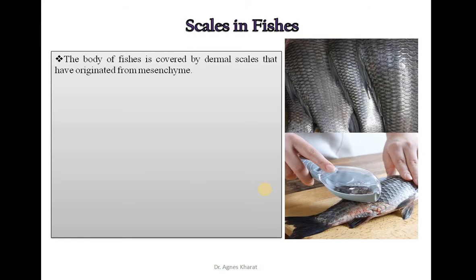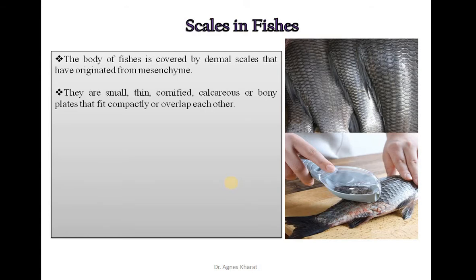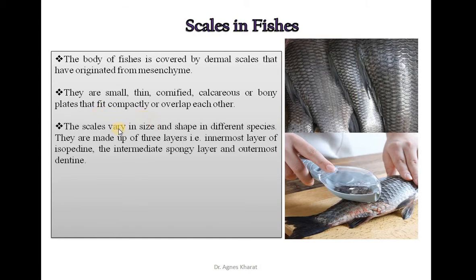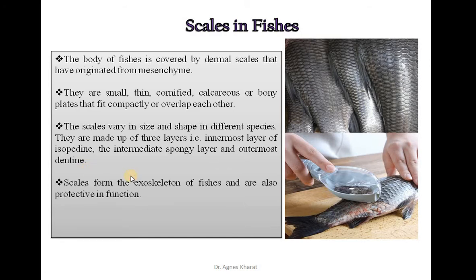The body of fish is covered by dermal scales that have originated from the mesenchyme layer of the body. They are small, thin, cornified, calcareous or bony plates that fit compactly or overlap each other. The scales vary in size and shape in different species. They are made up of three layers: the innermost layer of isopitine, the intermediate spongy layer, and the outermost dentine layer. Scales form the exoskeleton of fishes and are also protective in function.